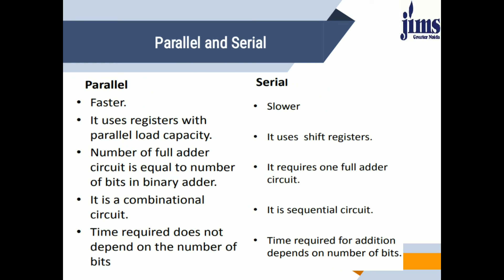The parallel adder is faster than the serial adder because whenever we change the input, we do not need to add bits one by one — they are added simultaneously in parallel. The parallel adder uses registers with parallel load capacity, whereas the serial adder uses only shift registers. In a parallel adder, the number of full adder circuits equals the number of bits, while a serial adder requires only one full adder circuit.